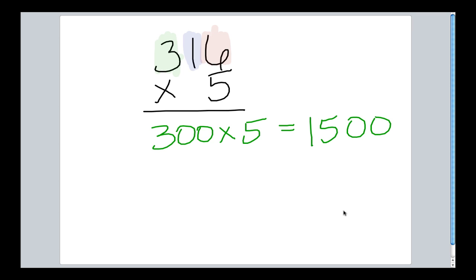Next, let's move on and multiply our tens. We have 10, again multiplied by our 5, which gives us 50. Lastly, let's do our ones part. We have 6 times 5, which gives us 30.